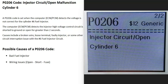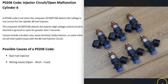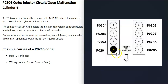Today I'm talking about a P0206 code — what it is and how you can go about fixing it. A P0206 is an injector circuit open malfunction for cylinder six. Each cylinder in the engine has a fuel injector that injects fuel into it, and this code means the computer is seeing a problem with the cylinder six fuel injector. A P0201 would point to cylinder one, P0202 to cylinder two, and so on.